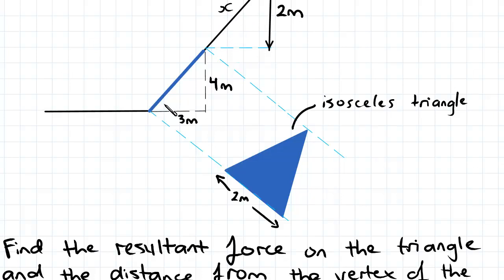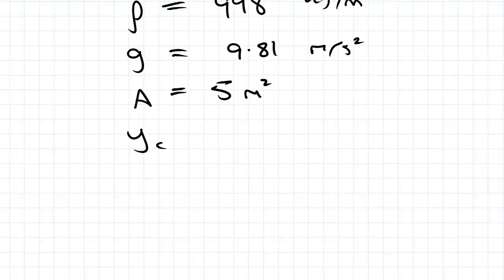First we need our theta here. Theta equals inverse tan 4 on 3. Subbing in for sine theta equals 2 on x, solving for x we'll get an answer of 2.5. So our Yc will be 2.5 plus the distance of the centroid from the vertex of the triangle, and that will all add up to 35 on 6.